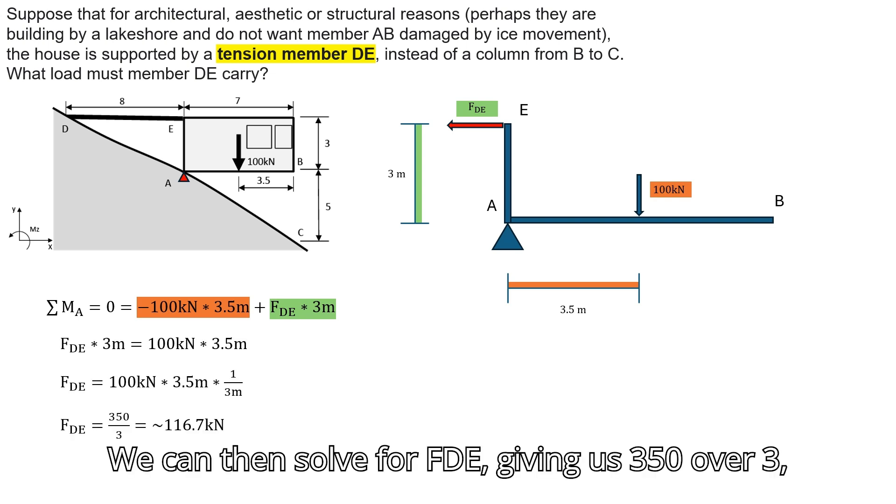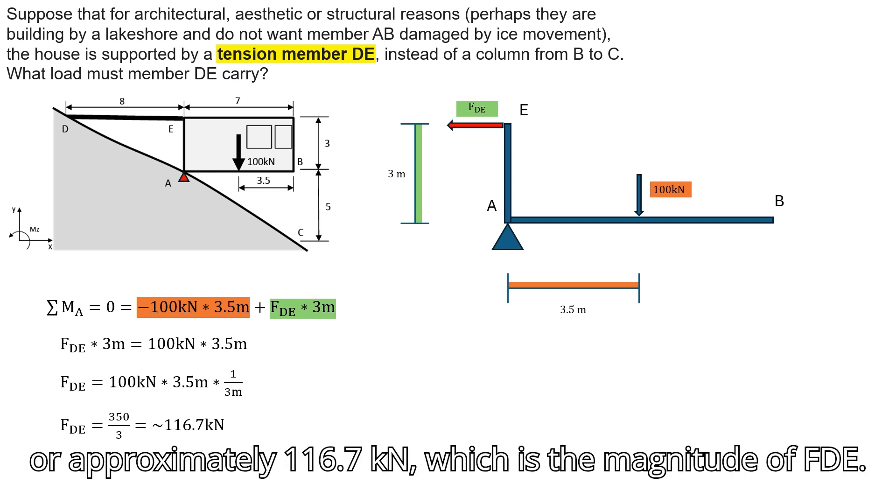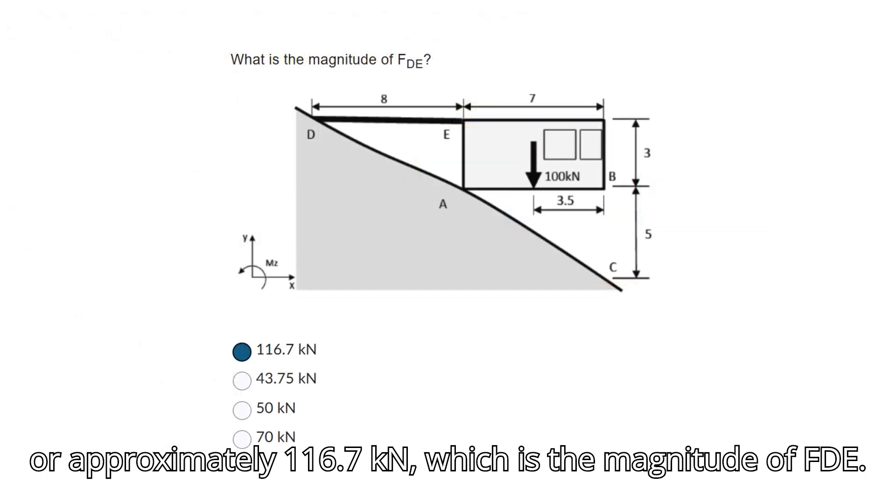We can then solve for FDE, giving us 350 over 3, or approximately 116.7 kN, which is the magnitude of FDE.